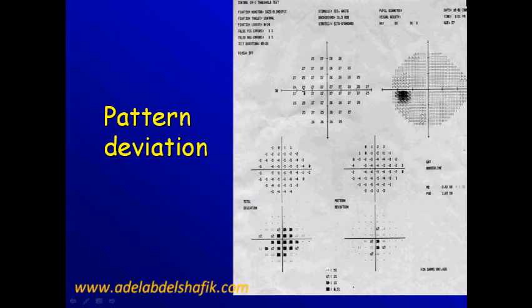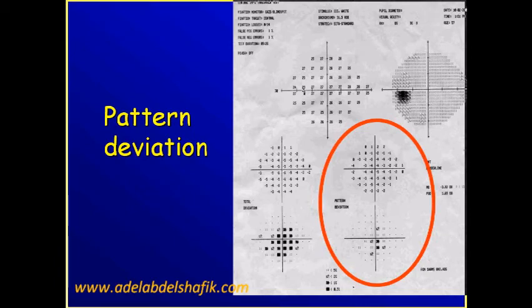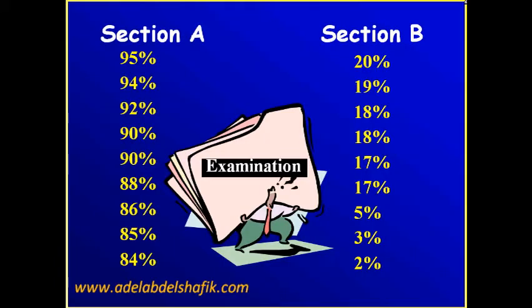Now we come to the pattern deviation. The printout of this area is known as the pattern deviation. To understand this, we need to explain some examples.